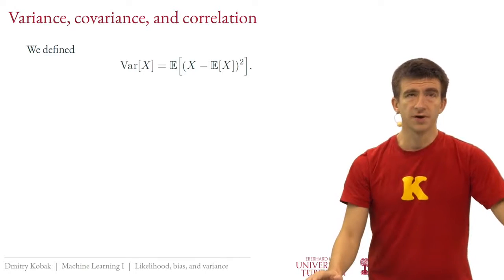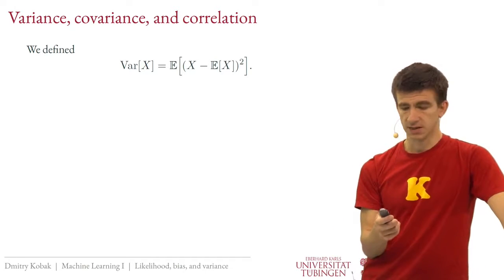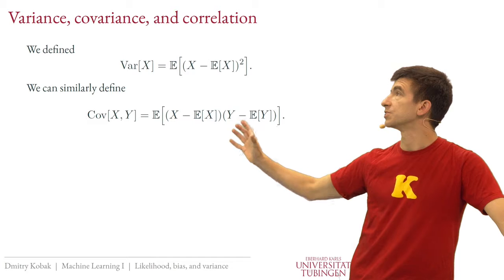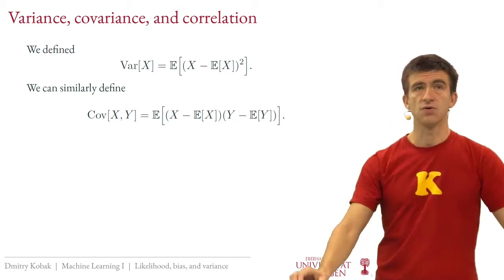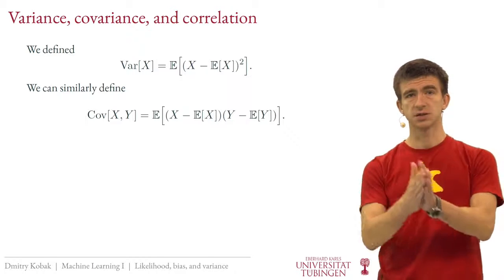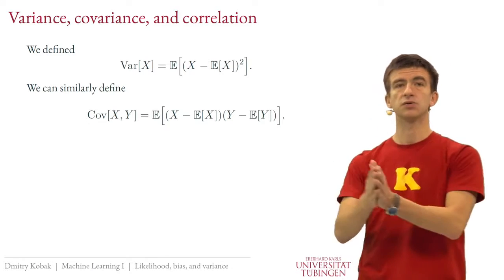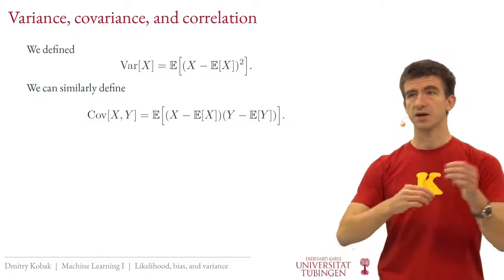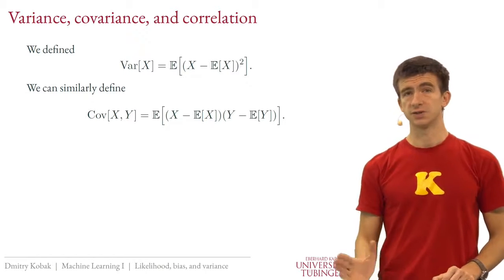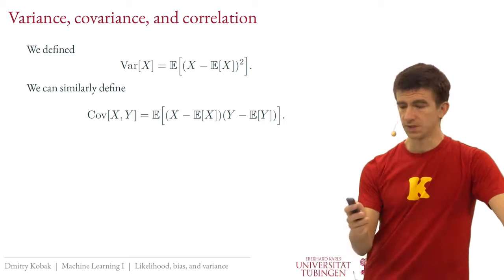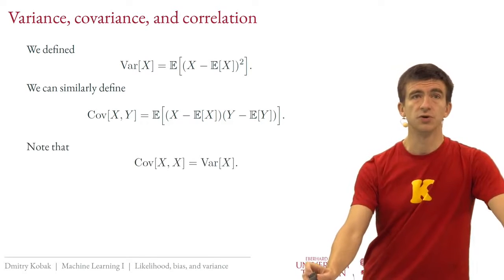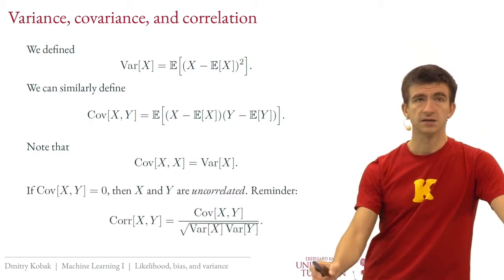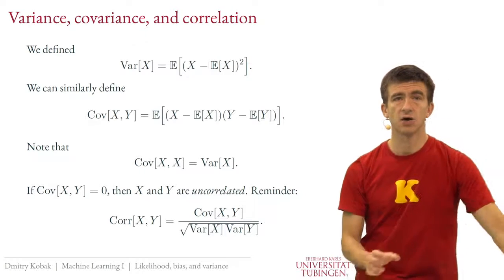Next we need covariance. We defined variance for a single variable, but if we have two random variables, we can define covariance between them. Covariance measures how they deviate from their respective means together. If both tend to be on the same side of their means simultaneously, they have positive covariance. If they vary completely unrelated to each other, the covariance will be zero — which is the definition of uncorrelated random variables. Note that the covariance of x with itself is just the variance.